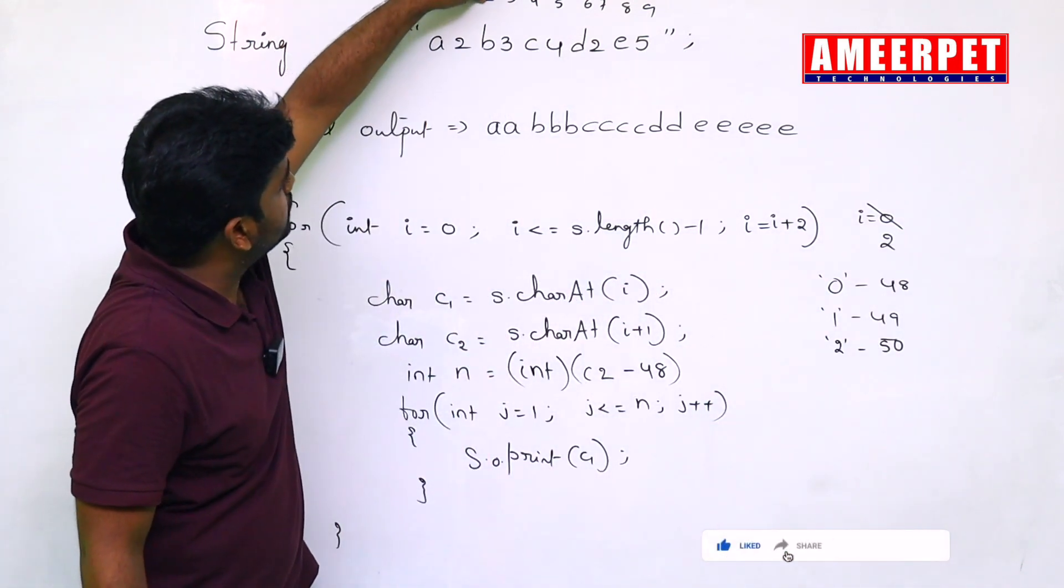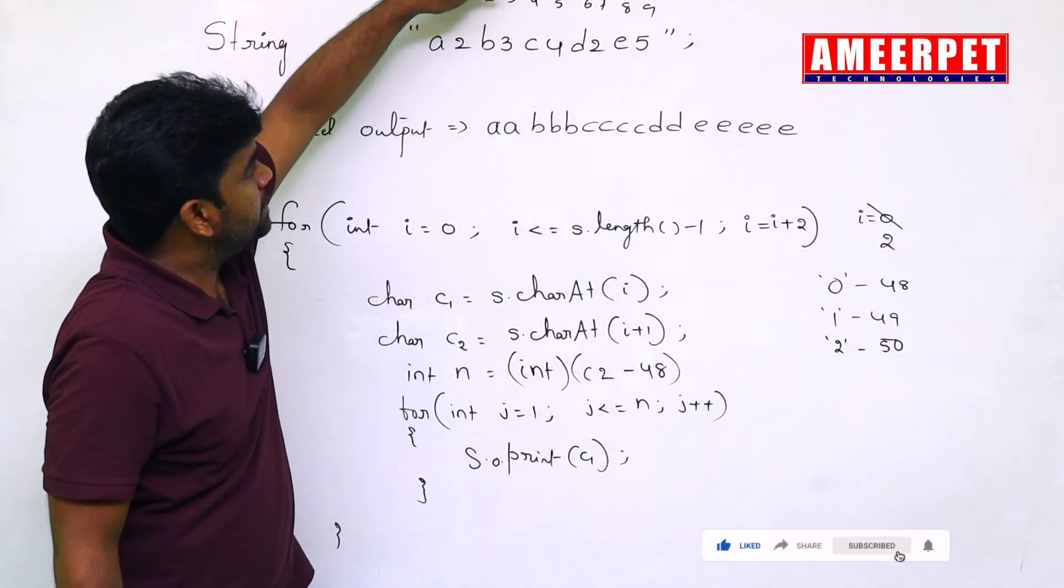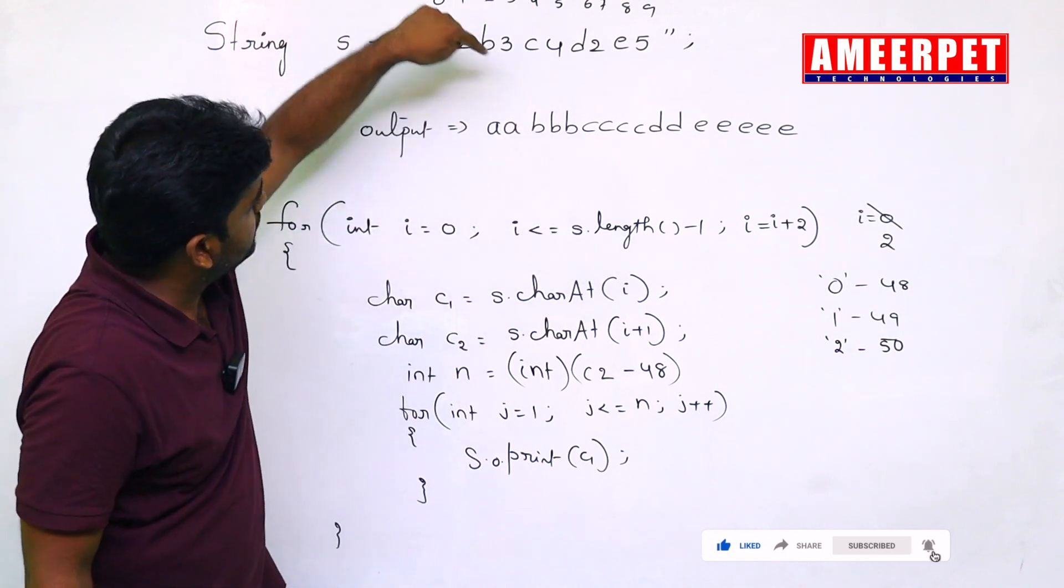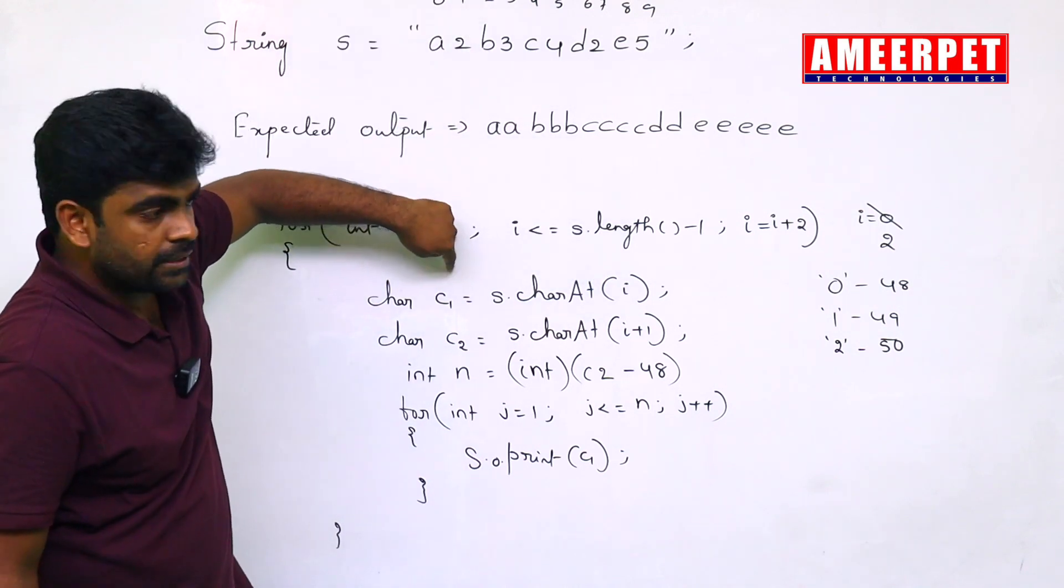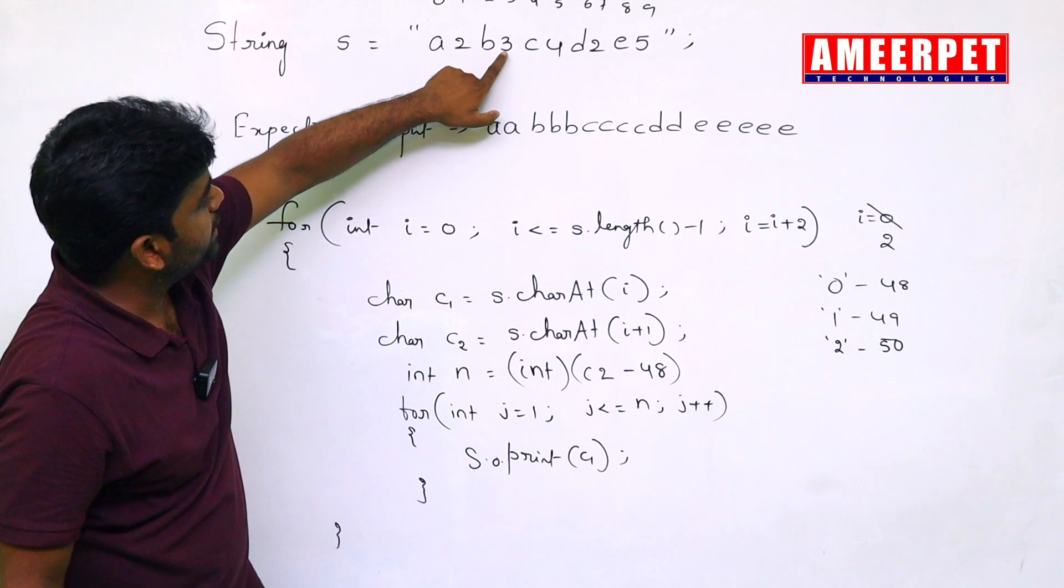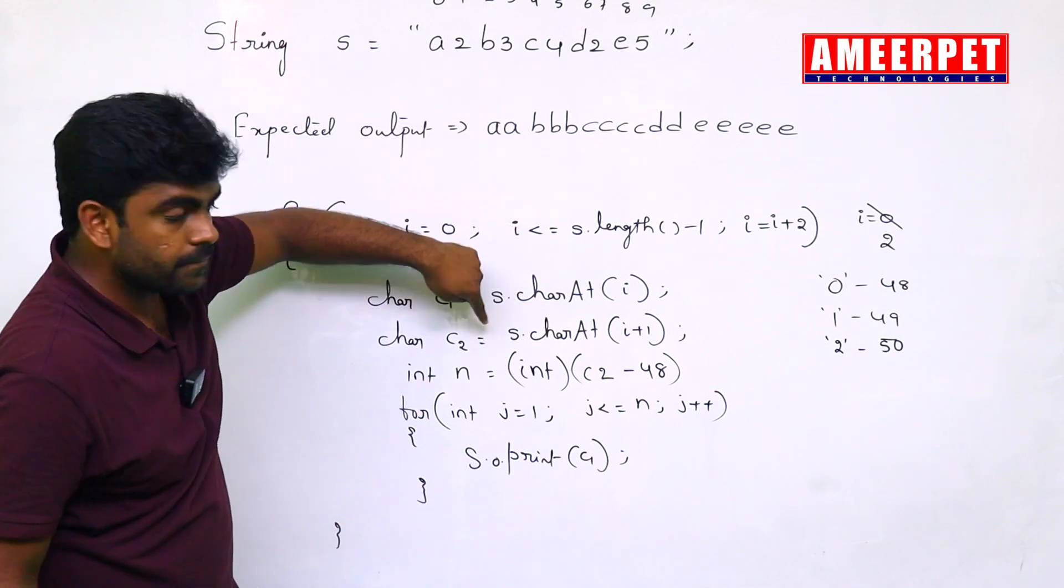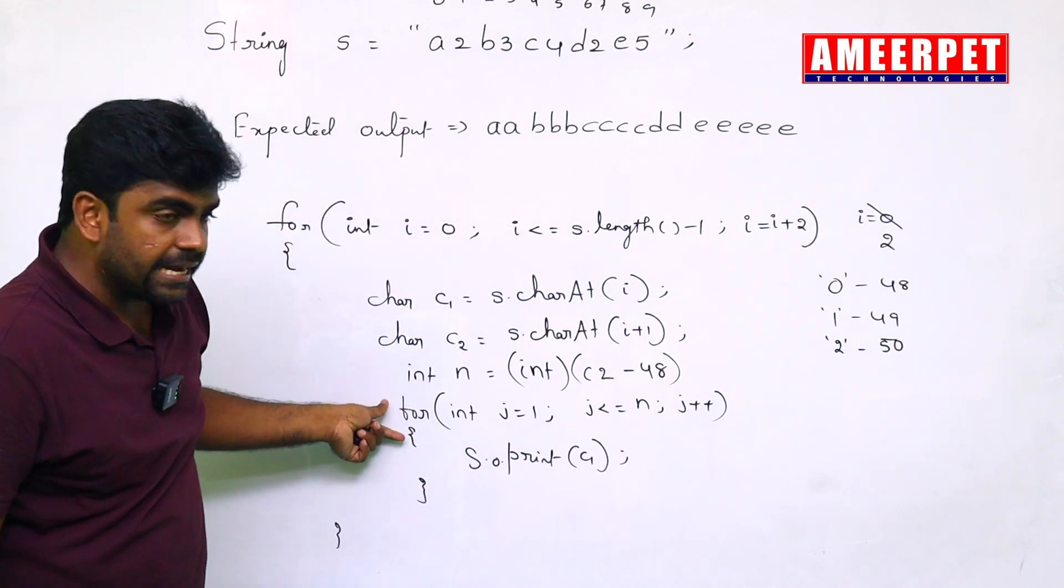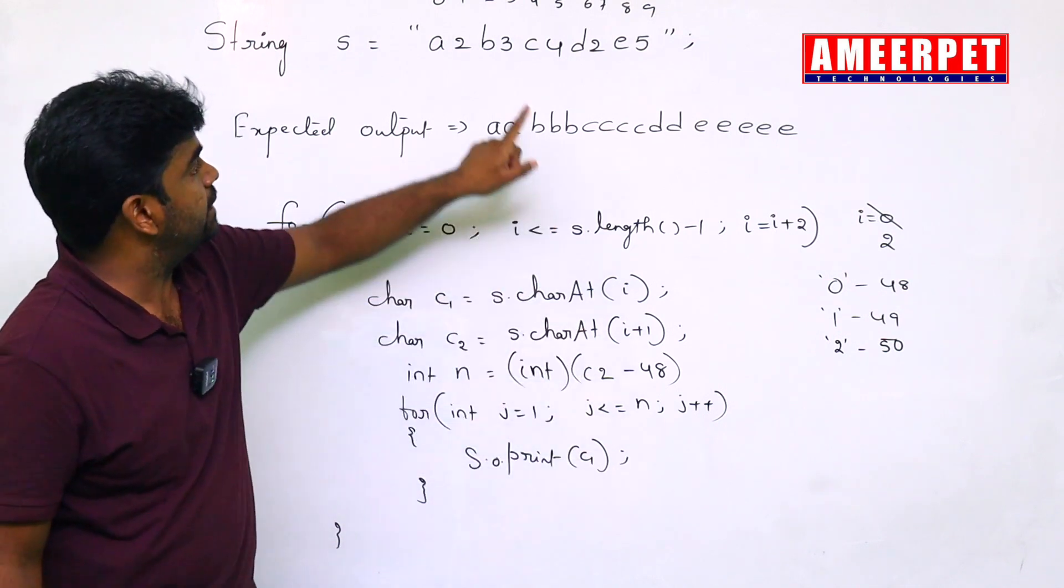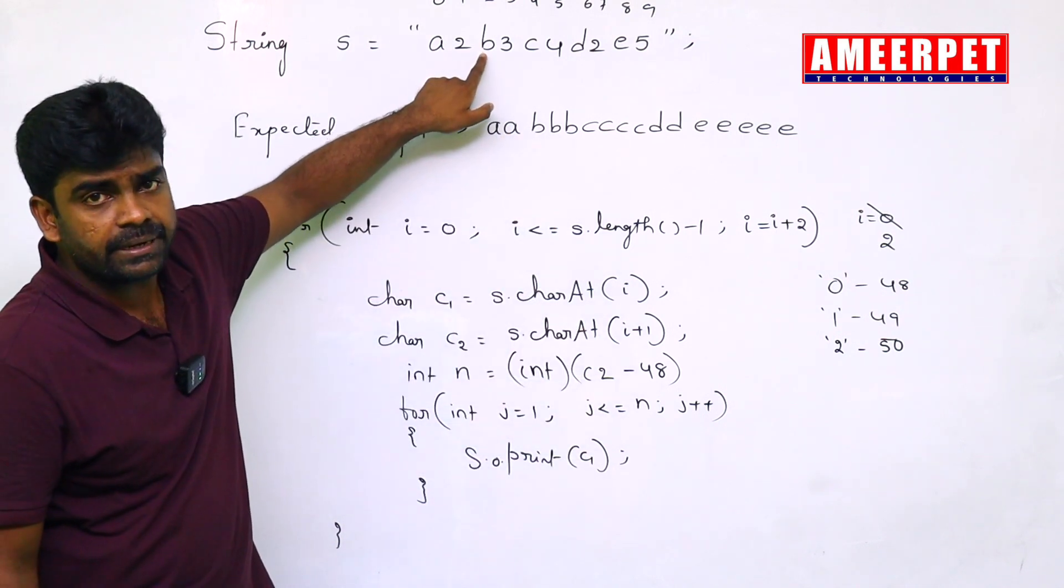Now, second location and third location will give. This is second location character, that is B. Next one is third location character is 3. Now it will repeat 3 times. 3 times the value will print. That is B, B, B will print.